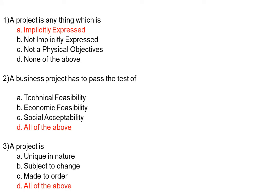A project is anything which is: option A implicitly expressed, option B not implicitly expressed, option C not a physical object, option D none of the above. The correct answer is option A, implicitly expressed.